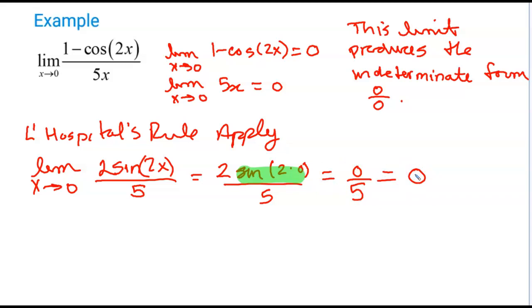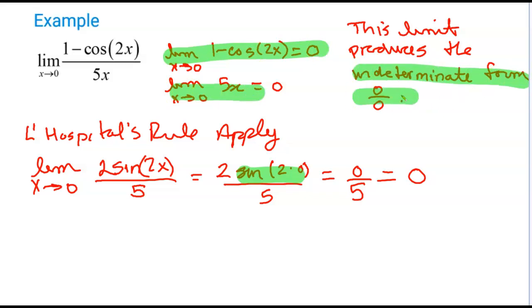To review: we need to show that the limit of the numerator is 0, the limit of the denominator is 0, make the indeterminate form statement, and then apply L'Hôpital's rule to evaluate the limit.